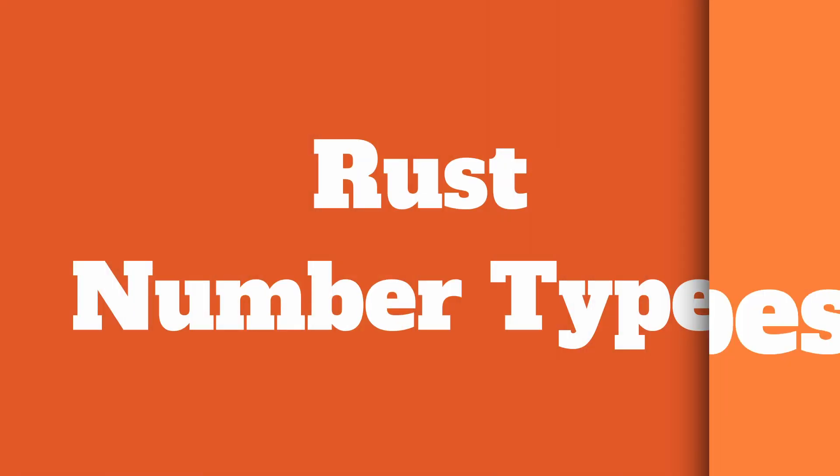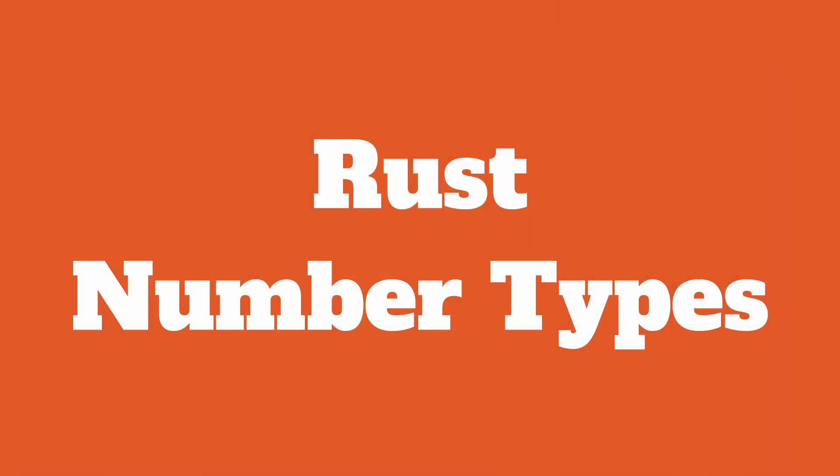If you want to get specific, an F64 can be explained in two parts. The F stands for float, which means we can use decimals. And the 64 defines what the largest number that this type can contain is. Rust definitely has more number types than JavaScript. But why?